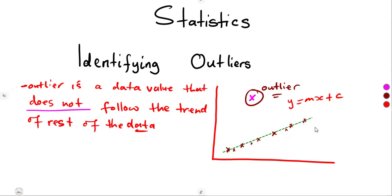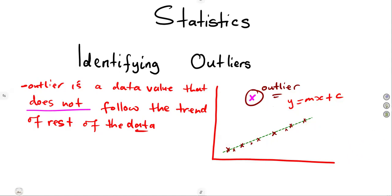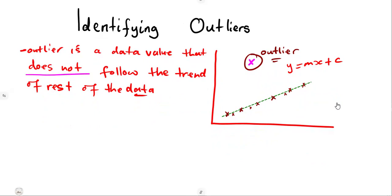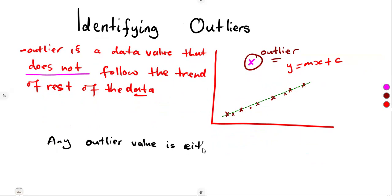So when we are dealing with information or working with data that is being presented, how can someone tell without a graph? In mathematics, in most cases, they will just give you a graph and you can identify the outlier just by looking at the points. But what if it is not presented graphically? How can someone tell about an outlier? It follows that any outlier value can be identified by either of the following two conditions.